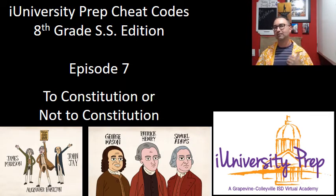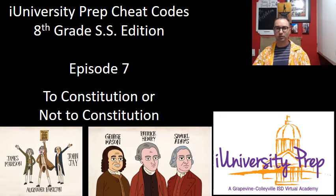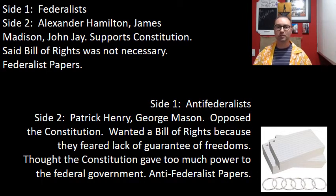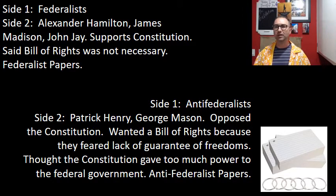Federalists were for the Constitution; Anti-Federalists were against it. For note card one — the Federalists: Alexander Hamilton, James Madison, John Jay. They support the Constitution, said the Bill of Rights was not necessary, and they wrote the Federalist Papers.